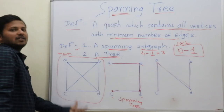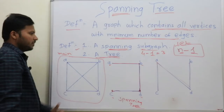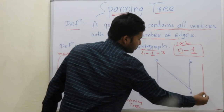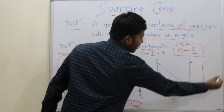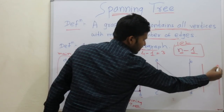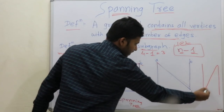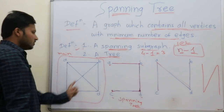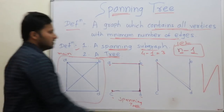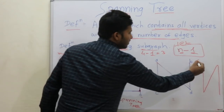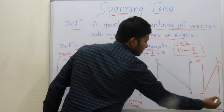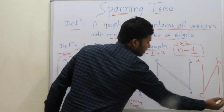Let's draw another spanning tree. If you take these two edges and another edge, this forms another spanning tree. Vertices A, B, C and D.